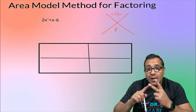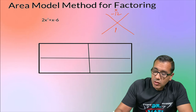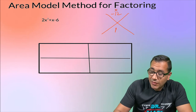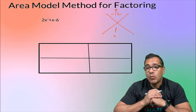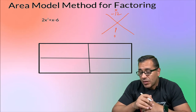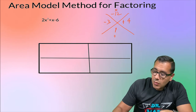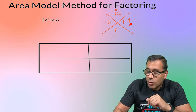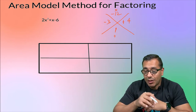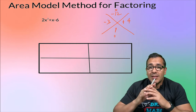Now you're looking for two numbers that multiply to give you negative 12 and add to give you one. We can see that negative three times positive four — those two numbers multiply to give you negative 12 and they add up to give you one. We're going to use those two numbers in a few seconds.